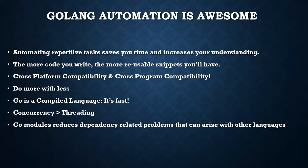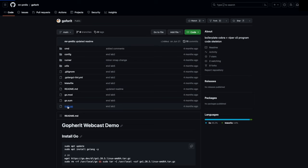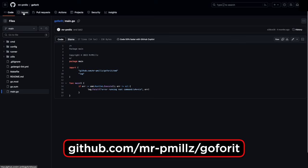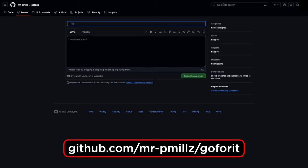Go automation saves tons of time and increases your understanding — the more you think about each step of a process you're automating, the better understanding you'll come out with. The whole foundation of this project is a batteries-included, plug-and-play skeleton framework to get up and running quickly. Cobra and Viper can be daunting if you've never used them, so this saves you the hassle of figuring out the most optimal code structure. Here is the public repo with all the code.